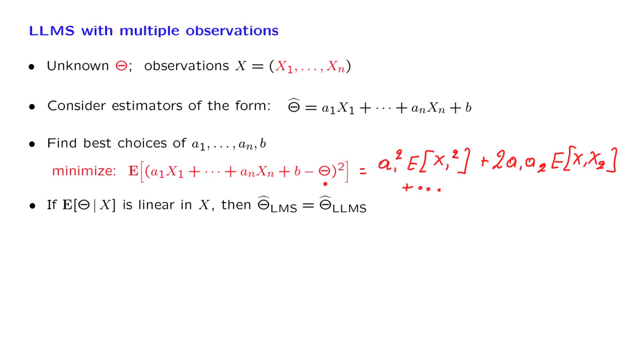And then there's going to be many more terms. Some of them will also involve products of theta with this. So we might see that we have a term of the form a1 expected value of x1 theta. And then there's going to be many, many more terms.